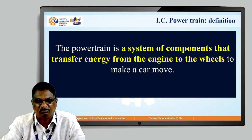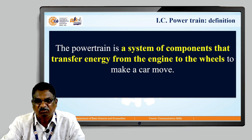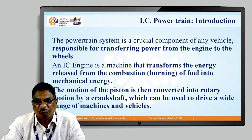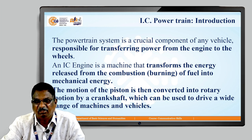What is the definition of IC powertrain? The powertrain is a system of components that transfer energy from the engine to the wheels to make a car move. The powertrain system is a crucial component of any vehicle, responsible for transferring the power from the engine into the wheels. Therefore, it is called a powertrain.